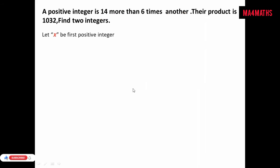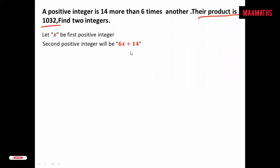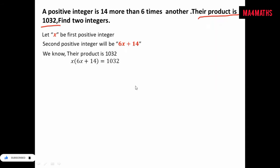So the first integer is x and the second will be 6x plus 14. The given condition is that their product is 1032. We take the product of these two positive integers x and 6x plus 14, giving us x into 6x plus 14 is equal to 1032.